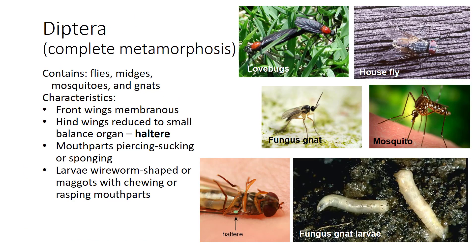Diptera means two wings, containing the flies, midges, mosquitoes, and gnats. Diptera have membranous front wings and hind wings that are reduced to knob-like halteres used for balance. They have piercing-sucking mouthparts like mosquitoes, or sponging mouthparts like houseflies. Their larvae are maggots with chewing or rasping mouthparts. Many flies are human health or animal problems — mosquitoes are major vectors of diseases, and horseflies and other biting flies are a nuisance. Some are plant pests, such as fungus gnats, which will infest plant roots in moist soils.